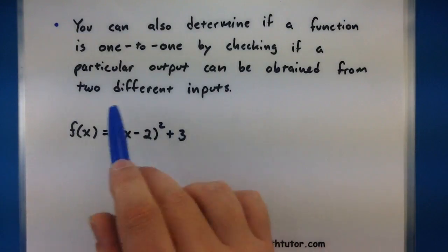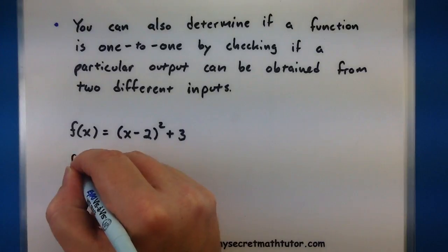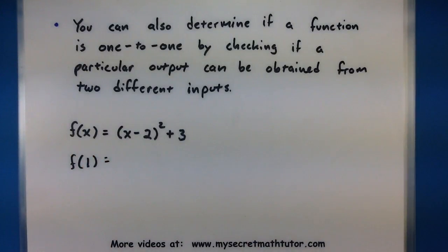So for example maybe I'm looking at this guy. f(x) = (x - 2)² + 3. And it does happen to be a function. But I'm curious is it a one to one function. Well here's one way that I can show that it is not a one to one function. I can test two particular inputs. For example let's go ahead and test it out at one. Let's see the result we get.